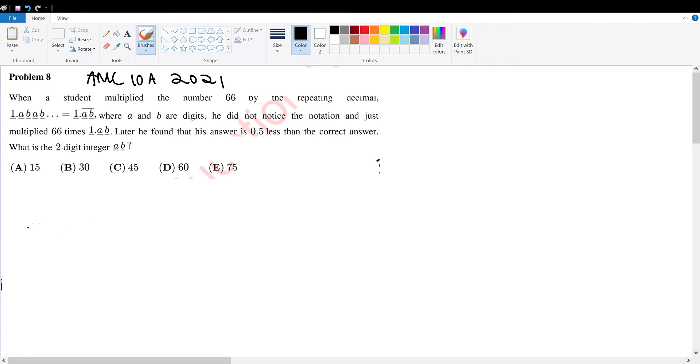So following along, you'll get the answer. We're told he multiplied 66 with 1.AB. Now this is equal to 0.5 less than the correct answer, which is 66 times 1.AB repeating minus 0.5. So given this information, we can solve for A.B.